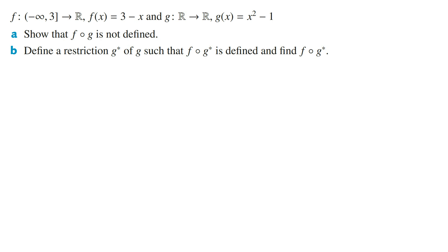f of x equals 3 minus x and g of x equals x squared minus 1. Part a: Show that f of g of x is not defined.